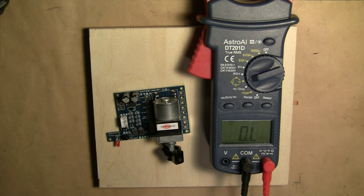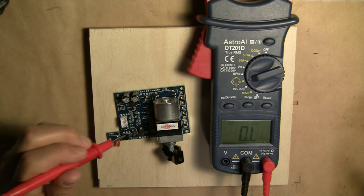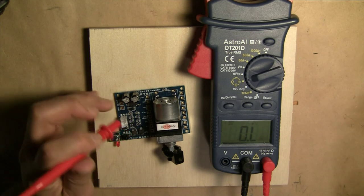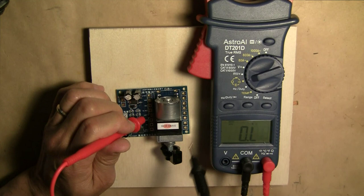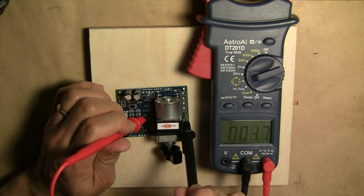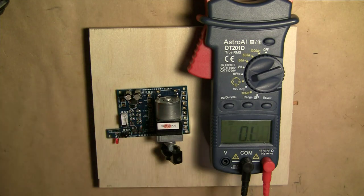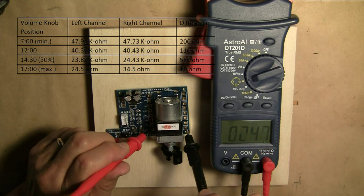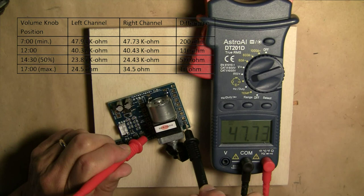The next test is to check the resistance of the right and left channels of the potentiometer. So with the volume control turned all the way counterclockwise, the left channel resistance is 47.9 kilo ohms. The right channel resistance is 47.73.